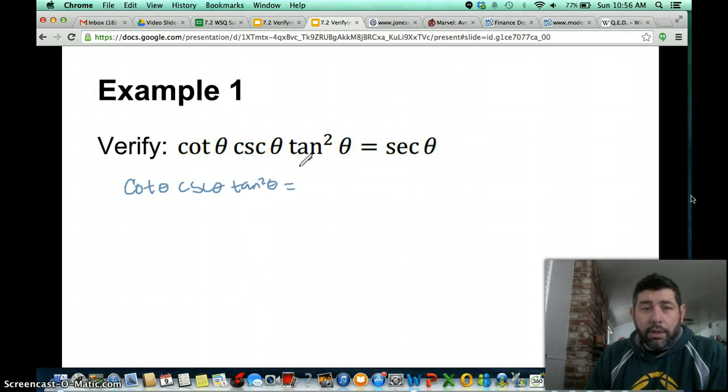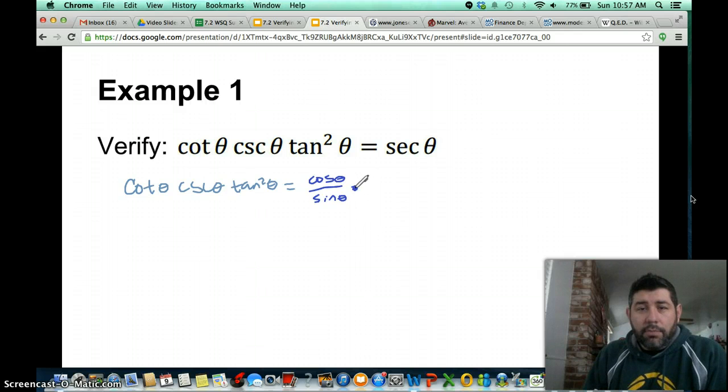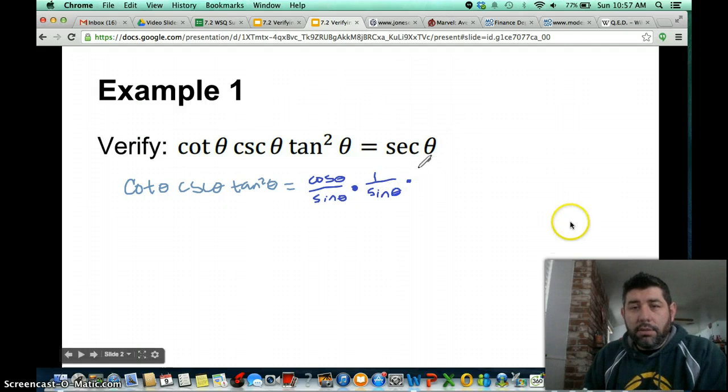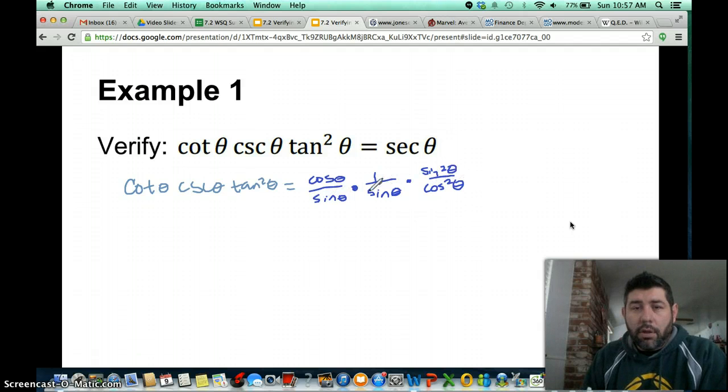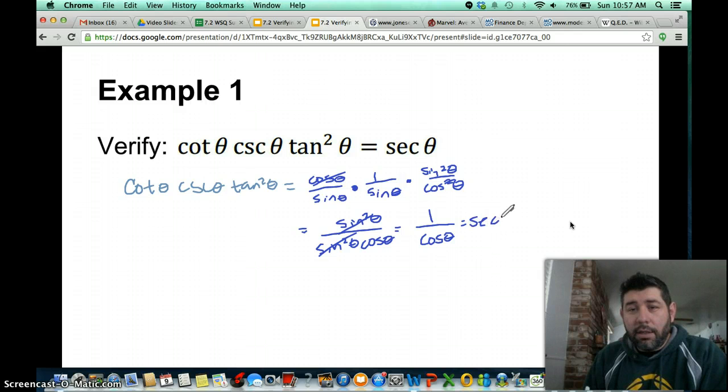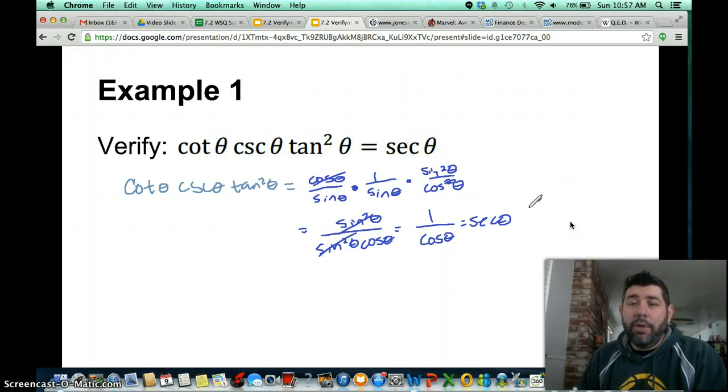Let me use a darker color here. So cotangent is cosine over sine, times cosecant is 1 over sine. And tangent is sine squared over cosine squared. So notice here, we're going to have this cosine is going to cancel with one of these cosines. These two sines are going to multiply together. We're going to have sine squared over sine times sine of sine squared times cosine, because we already got rid of one of these cosines. And notice the sine squared give us 1 over cosine theta. And 1 over cosine theta is secant theta.